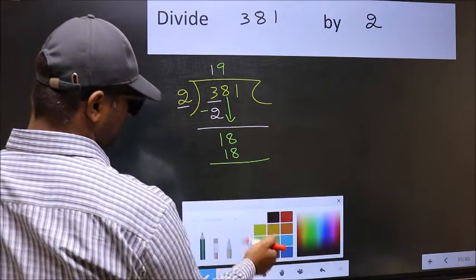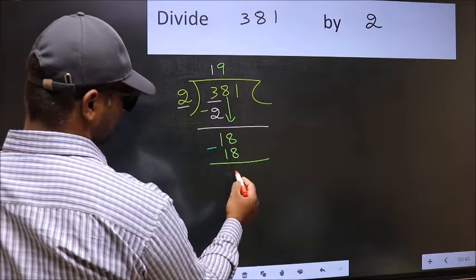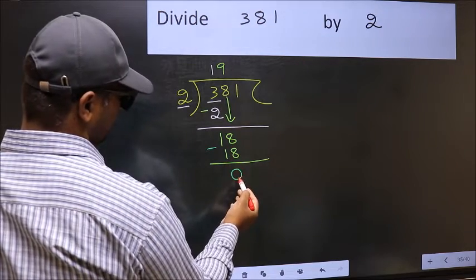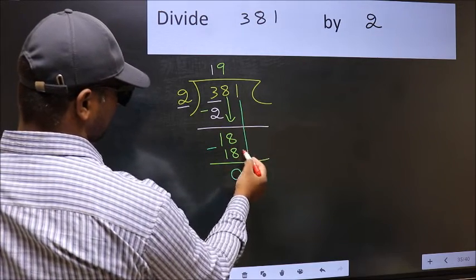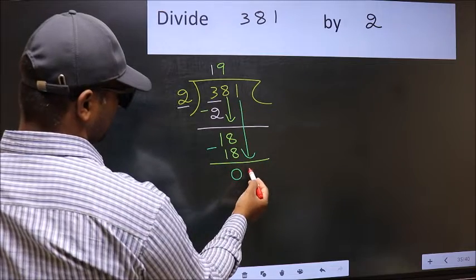Now you should subtract. 18 minus 18, 0. After this, bring down the beside number. So, 1 down.